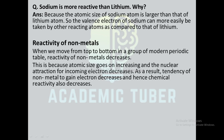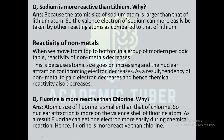Reactivity of non-metals: when we move from top to bottom in a group of the modern periodic table, reactivity of non-metals decreases. This is because atomic size goes on increasing and the nuclear attraction for the incoming electron decreases. As a result, the tendency of non-metals to gain electrons also decreases and hence chemical reactivity also decreases. Fluorine is more reactive than chlorine because the atomic size of fluorine is smaller than that of chlorine, so the nuclear attraction is more on the valence shell of fluorine, and fluorine can gain one electron more easily during chemical reaction.